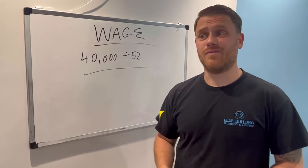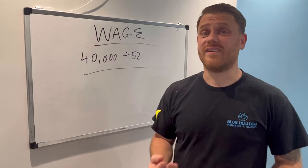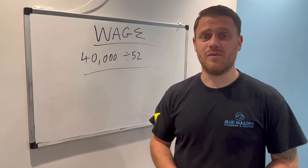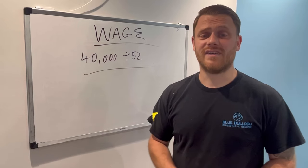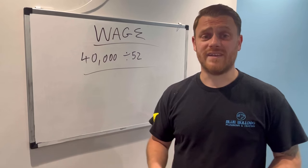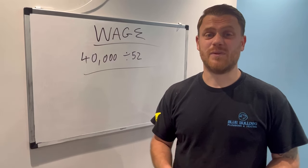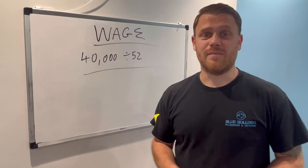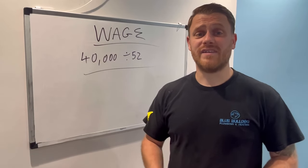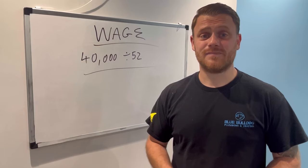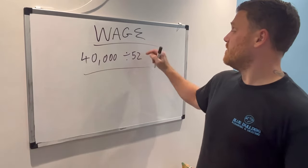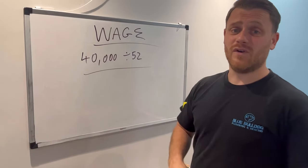You need to take holiday into consideration — you can't go flat out 52 weeks a year. If you work for a company, the standard is 20 days plus bank holidays, giving you 28 days off. For this example we'll be generous and give ourselves 30 days, which is 6 weeks. So instead of 52 working weeks, we now have 46.